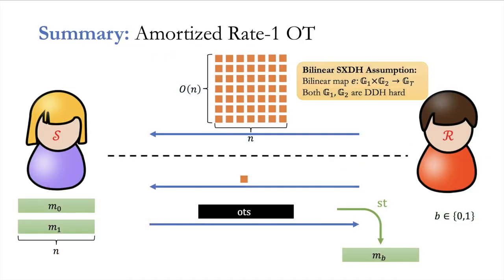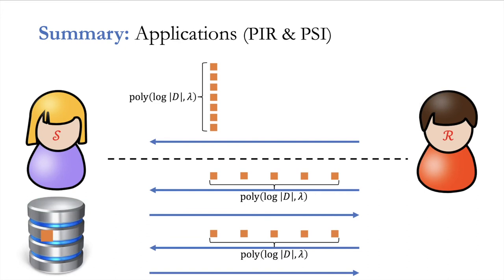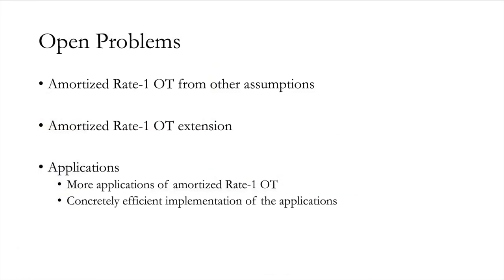To summarize: we proposed a new primitive called amortized Rate-1 OT, with a construction from the bilinear SXDH assumption, and further offline communication reduction from the bilinear power-DDH assumption. Given this primitive, we can reduce receiver communication in applications such as PIR and PSI. Open problems include: Can we achieve amortized Rate-1 OT from other assumptions? Can we achieve amortized Rate-1 OT extension? Can we find more applications of amortized Rate-1 OT? And can we get concretely efficient implementations of the existing applications? Thank you.